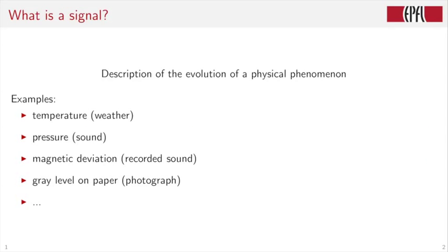What is actually a signal? We talk about digital signal processing, so we need to define what the signal is. Typically it's a description of the evolution of a physical phenomenon. For example, if I speak here, there is sound pressure waves going through the air that will be picked up by a microphone, and that's a typical signal.